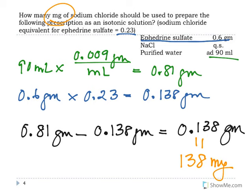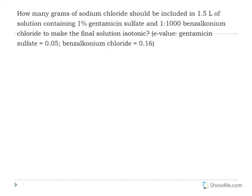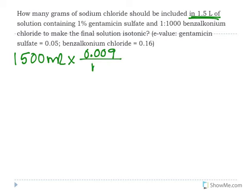Let's look at another example. This one also asks us to make an isotonic solution with sodium chloride, but there are two drugs in the solution and they're given in ratio strength, not grams. You still follow the same steps. Step one: we're making 1.5 liters, or 1500 mL. Multiply 1500 mL by 0.009 grams per mL to get 13.5 grams — the amount of sodium chloride needed if this were only a normal saline solution.